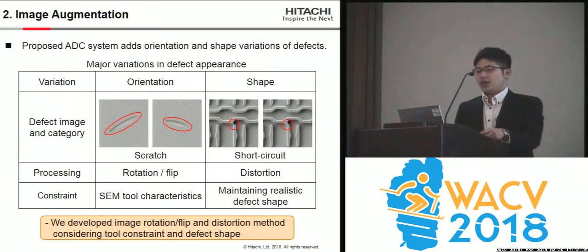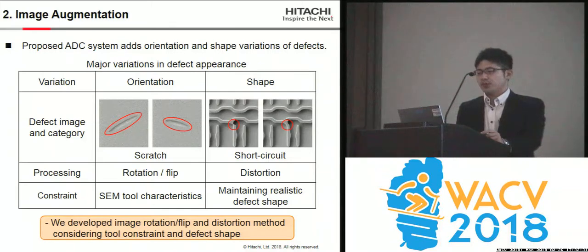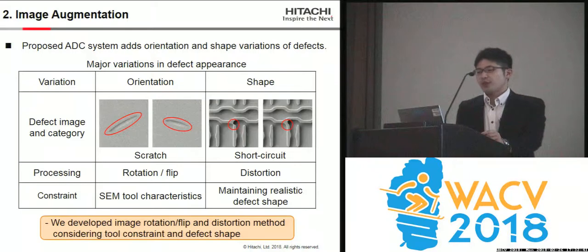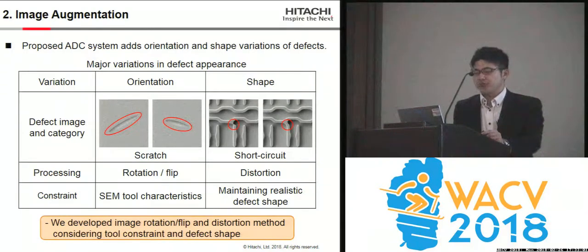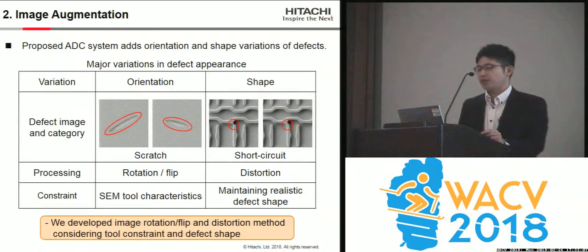The proposed ADC system adds orientation and shape variations of defects. This figure shows the two measured variations in defect appearance. A scratch is a typical defect expected to be effectively classified by applying the orientation variation. However, there is a SEM tool constraint to be considered when rotating and flipping SEM images. Also, a short circuit of wiring lines is a typical defect expected to be effectively classified by applying the distortion. However, distorted defects must be likely to exist. So we developed an image rotation, flip, and distortion method considering tool constraint and defect shape.